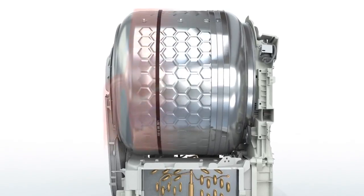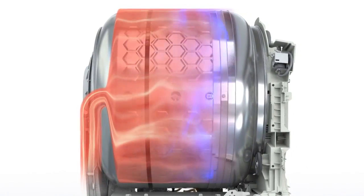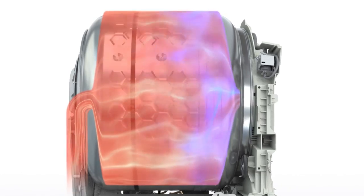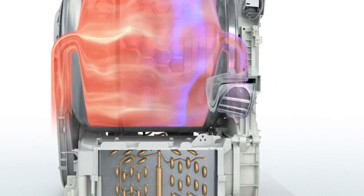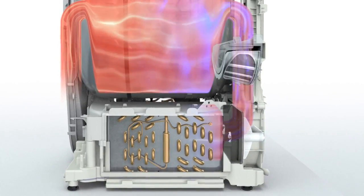In the air circuit, hot dry air enters the drum and absorbs moisture from the laundry load. The hot moist air then passes through several filters before entering the first heat exchanger.